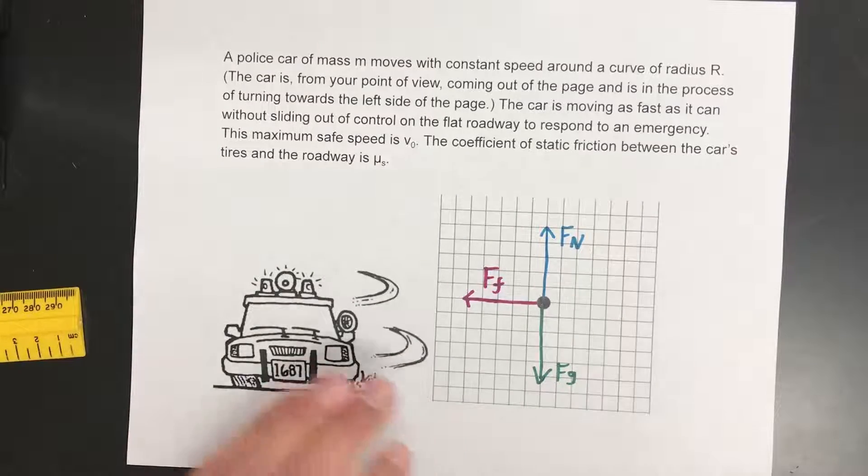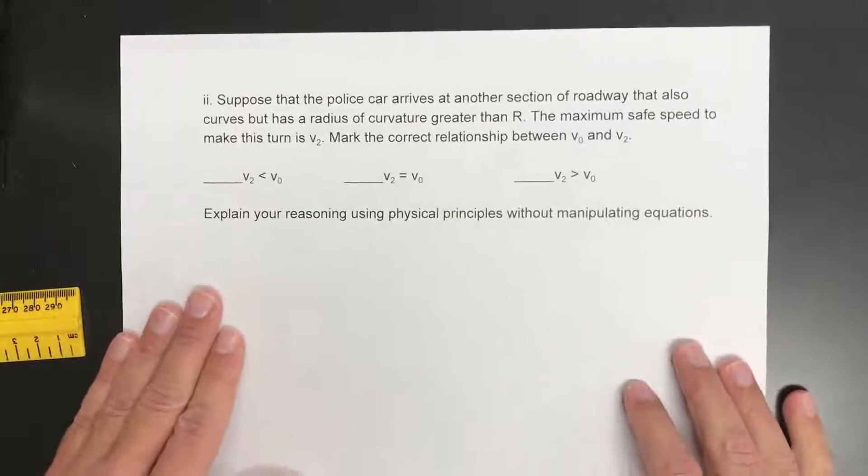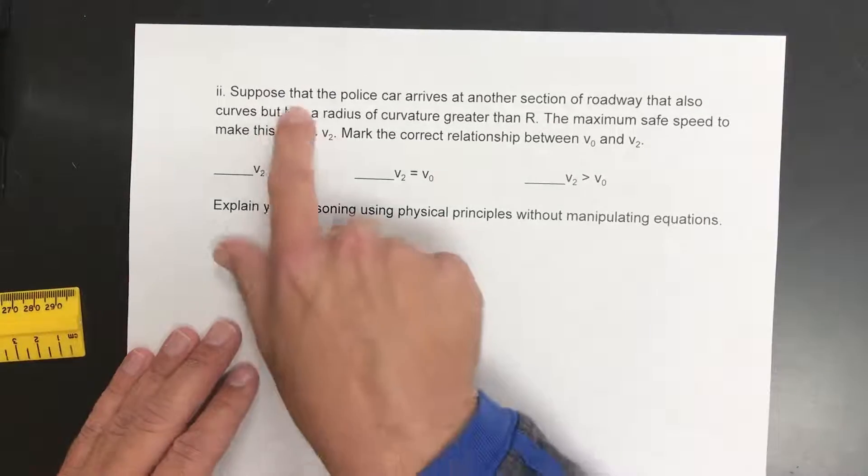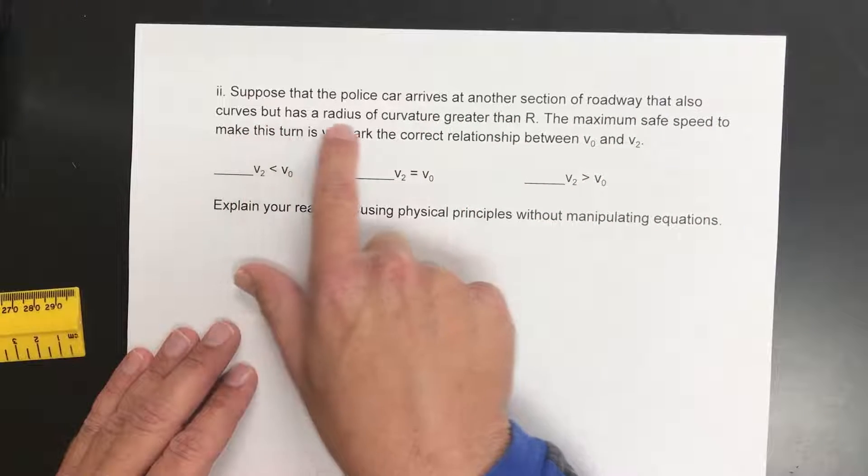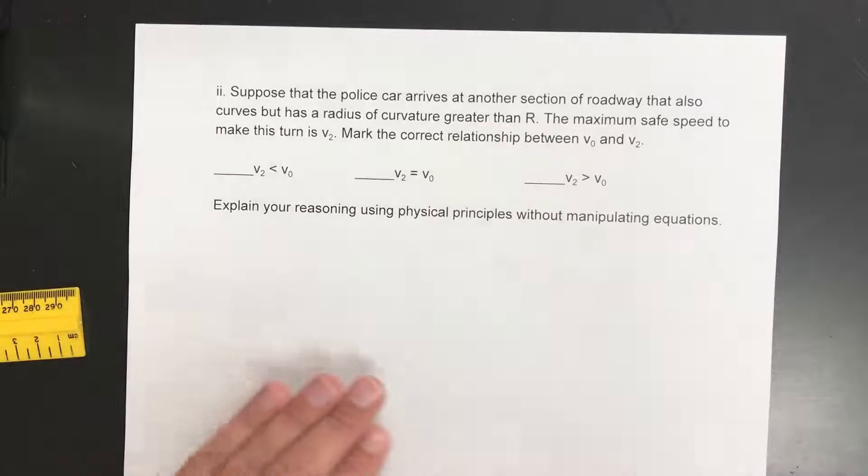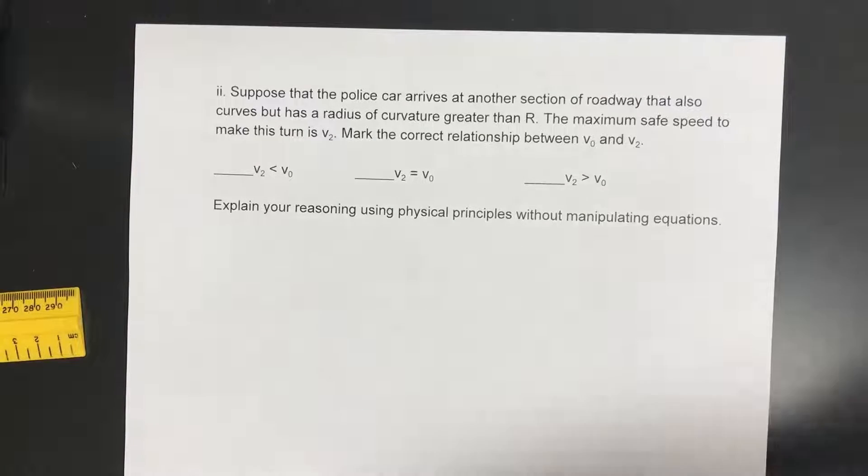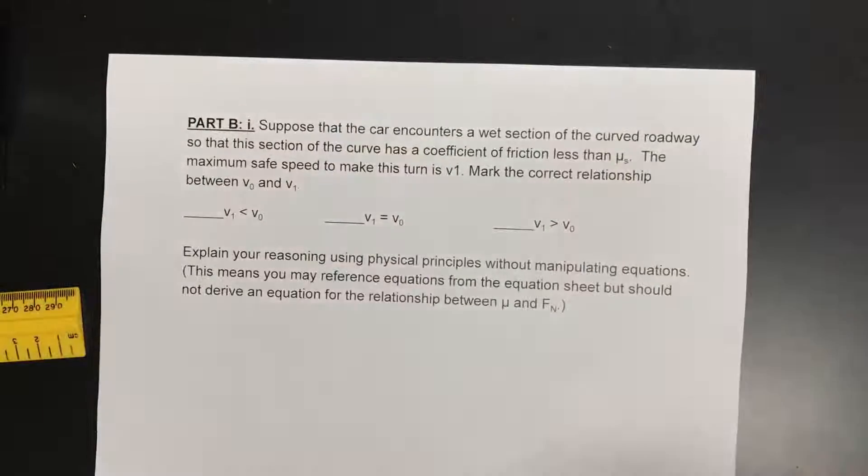So next part up here is it says suppose the police car arrives at another section of the roadway that also curves but has a radius of curvature greater than r. Actually sorry I'm going out of order here. That's not the next part. The next part is right here.